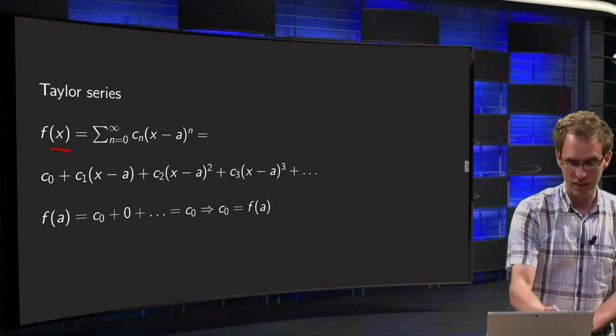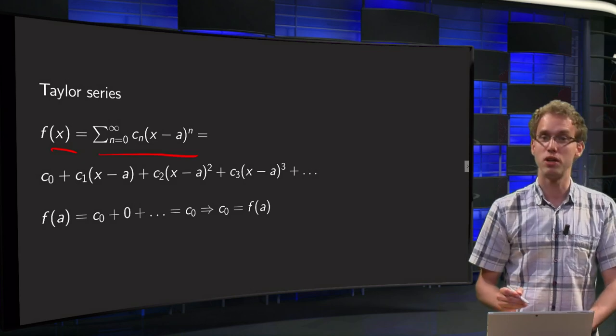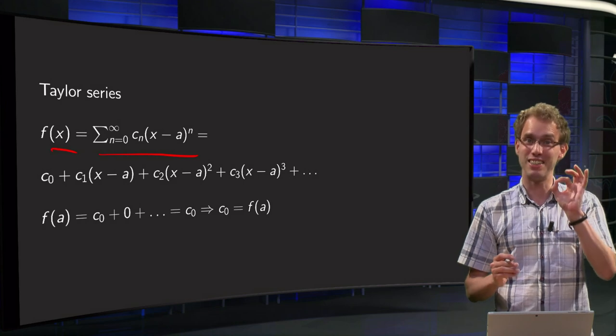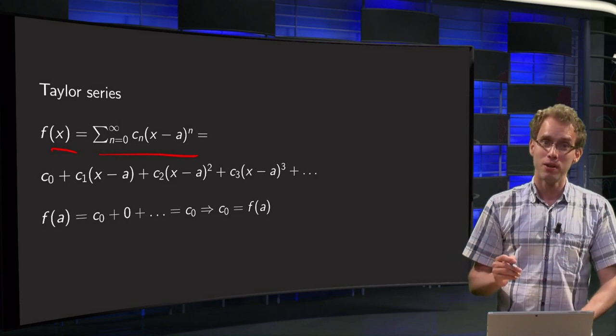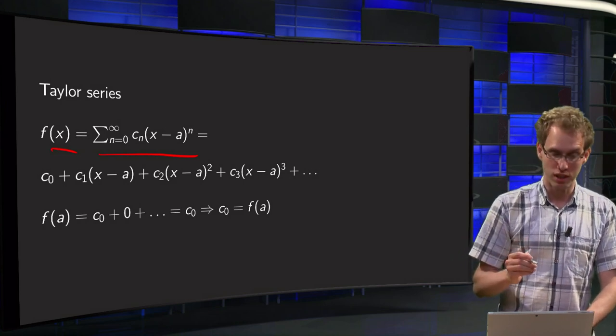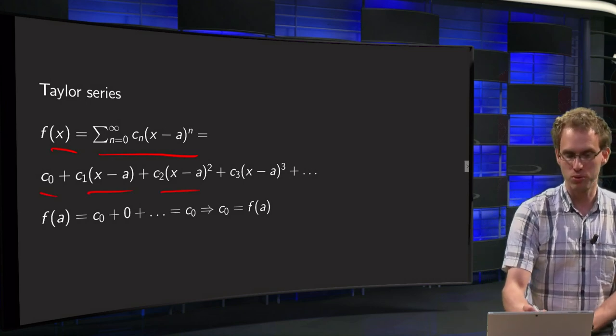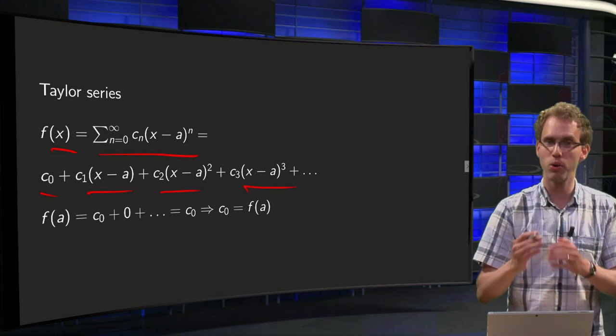If f has a power series representation, sum cn times (x-a) to the power n, and we want to find the cn, its coefficients. If f has such a representation, we can write it down as c0 plus c1 times (x-a) plus c2 times (x-a) squared and so on.